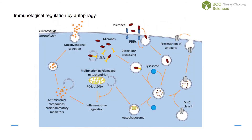Autophagy regulates several key steps of the immune response. In the innate immune response, autophagy aids in direct microbial pattern detection and processing. Upon recognition by membrane-bound pattern recognition receptors and intracellular sequestosome 1/P62-like receptors, microbes will be degraded through autophagy. Moreover, autophagy-mediated removal of malfunctioning or damaged mitochondria suppresses inflammation activation, since these organelles tend to release reactive oxygen species and double-stranded DNA, which would otherwise stimulate inflammation activation and the subsequent production of inflammatory initiators.